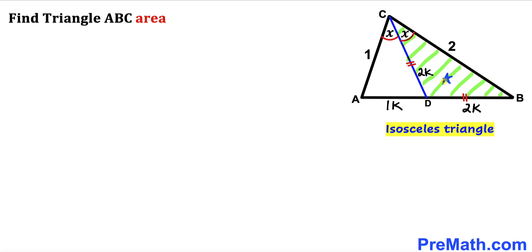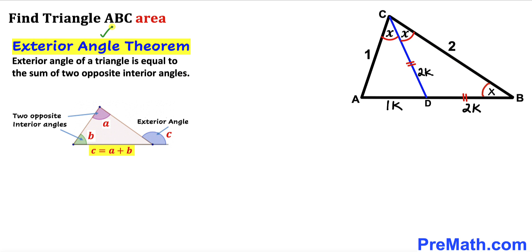Since triangle BCD is isosceles, this angle equals x degrees. Now let's recall the exterior angle theorem: the exterior angle of a triangle equals the sum of the two opposite interior angles. In our case, this exterior angle equals x plus x, so the exterior angle turns out to be 2 times x.